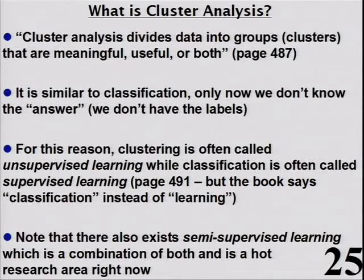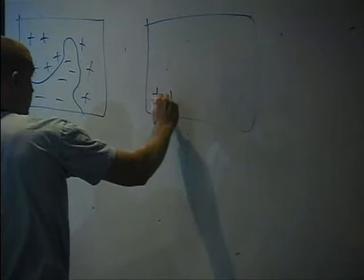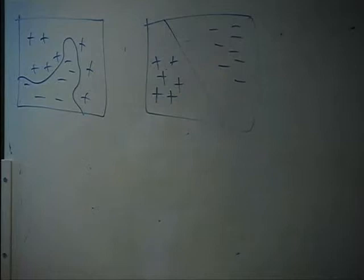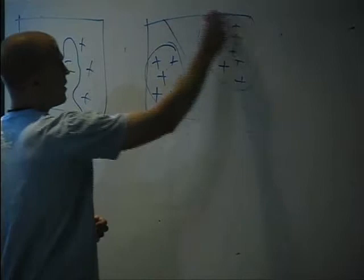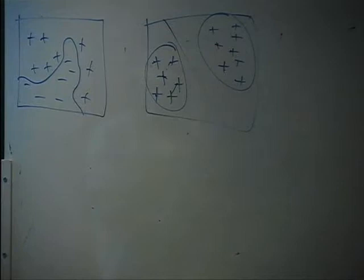If your data has clear natural groupings — one cluster here and another there — you can detect those groups even without labels, because within-group variation is small and between-group variation is big. There's also semi-supervised learning, a hot area right now combining both approaches: if most data is unlabeled but you have just a couple labeled points, you can try to combine clustering and supervised learning.